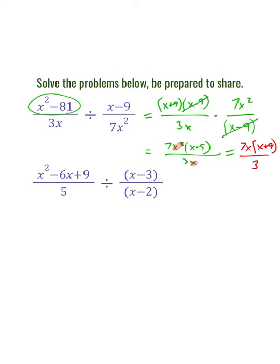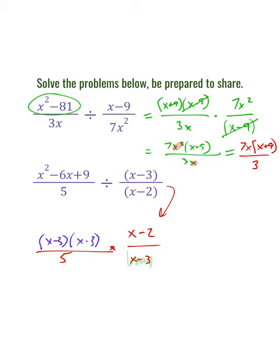For the second one, a similar strategy: flip and multiply on the divisor. We're going to have x minus 2 over x minus 3 flipped, turning this into multiplication. The dividend stays as x squared minus 6x plus 9. We want to see if there's an x minus 3 in there. It ends up being x minus 3 times x minus 3, which is x minus 3 squared — negative 3 times negative 3 is positive 9, and minus 3x plus minus 3x is minus 6x.